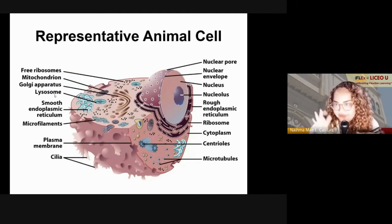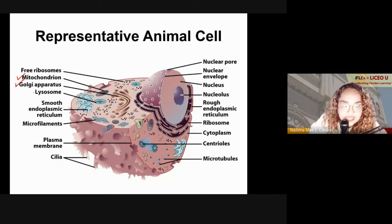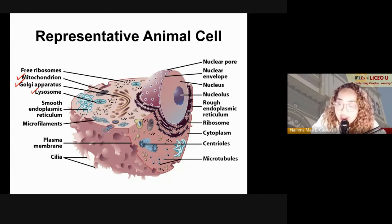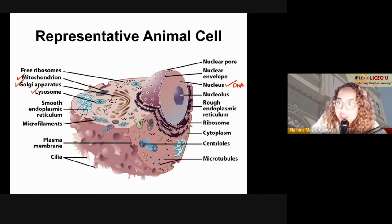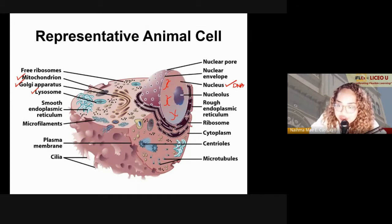In a eukaryotic animal cell, we will discuss the following organelles: the mitochondrion, also known as the powerhouse of the cell; the Golgi apparatus, the packaging center of the cell; the lysosome, responsible for digesting non-functioning cell parts and targeting invaders; and the nucleus, which houses your DNA and is enveloped by the nuclear envelope. The nucleus also has nuclear pores for communication, and inside it contains a region called the nucleolus where ribosomes are made.